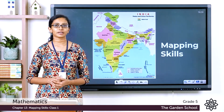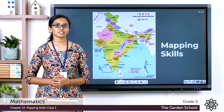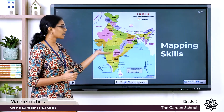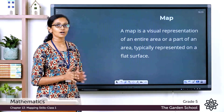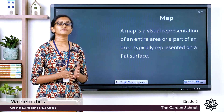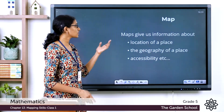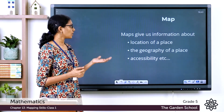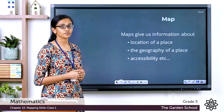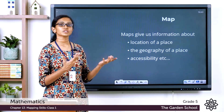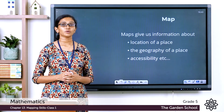Good morning Grade 5, welcome back to Grade 5 mathematics class. Today we start a new chapter — Chapter 13: Mapping Skills. I'm sure all of you have used or seen a map. A map is a visual representation of an entire area or part of an area, typically represented on a flat surface like paper. We use a map for finding the location of a place, to find the geography of a place, and also to find the accessibility — how we can reach a particular place.